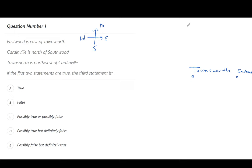Now for the next segment it says Cardenville is north of southward. So that means separately we know that if Cardenville is here, southward would be here. Because north of southward would be Cardenville.